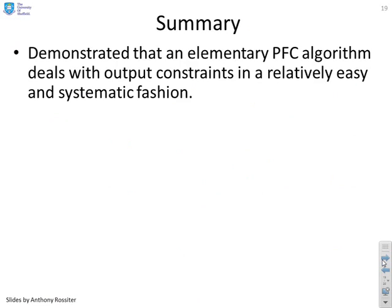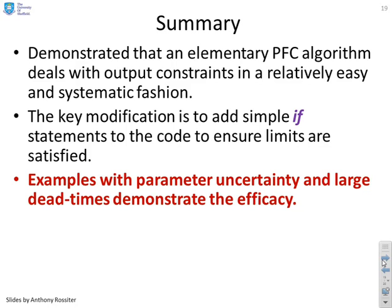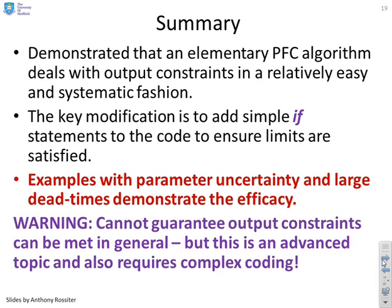In summary, an elementary PFC algorithm deals with output constraints in a relatively easy and systematic fashion. The key modification is to add simple if-statements to the code to ensure limits are satisfied. Examples with parameter uncertainty and large dead times demonstrate the efficacy. However, output constraints cannot be guaranteed in general because of uncertainty — guaranteeing them requires very complex coding and doesn't fit with PFC's general philosophy of keeping things simple.